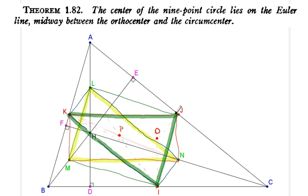Well, it turns out those two triangles are congruent and that they are just rotated half turn around the center of the nine-point circle.